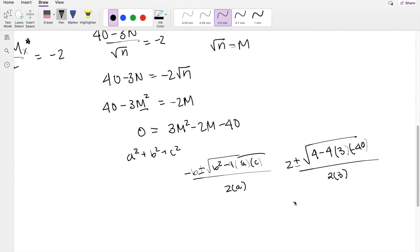Divided by 2 times a, which is 3. This becomes 2 plus or minus square root of 4 plus 4 times 40 times 3, so that's 484, the whole thing divided by 6.